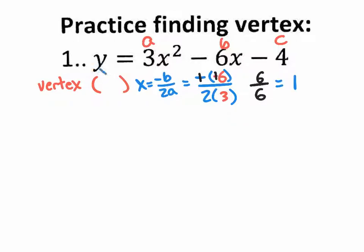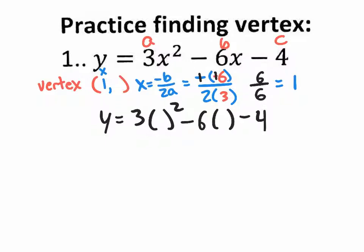The vertex x value is 1. Now if I want the y value, all I have to do is plug in the x value of 1. So let me rewrite my function: y equals 3 parentheses squared minus 6 parentheses minus 4, plugging in the x value of 1. 1 squared is 1, and 1 times 3 is 3. 6 times 1 is 6, and of course there's a minus sign. The minus 4 at the very end comes down. So when I do 3 take away 6 take away 4, that gives me negative 7.